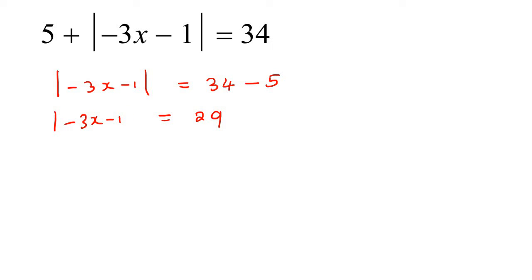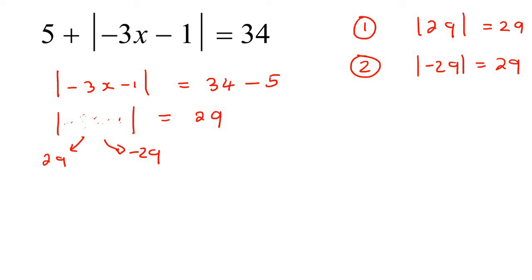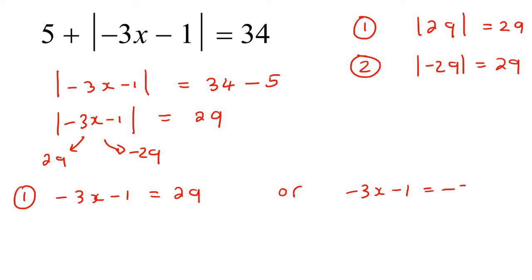Now we're back to Type 1 questions — the absolute value is by itself. So we scratch out what's inside, and ask: what number gives you 29? The absolute value of 29 is 29, and the absolute value of minus 29 also gives 29. So whatever's inside could be 29 or negative 29. Uncovering, whatever's inside the absolute value is allowed to be 29, or it's also allowed to be negative 29.